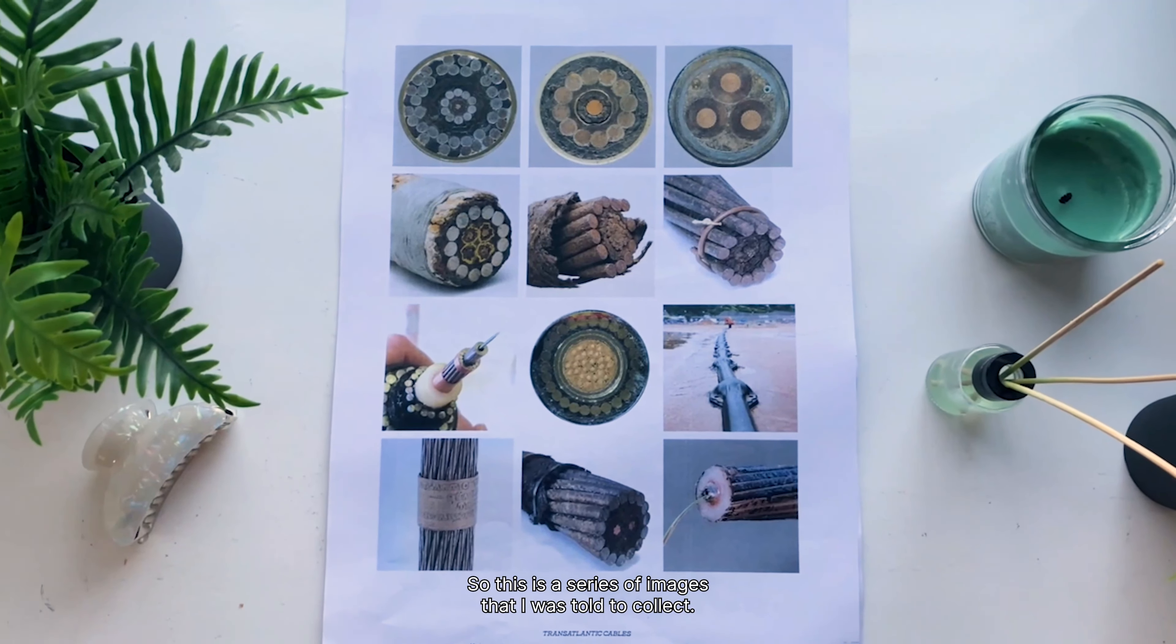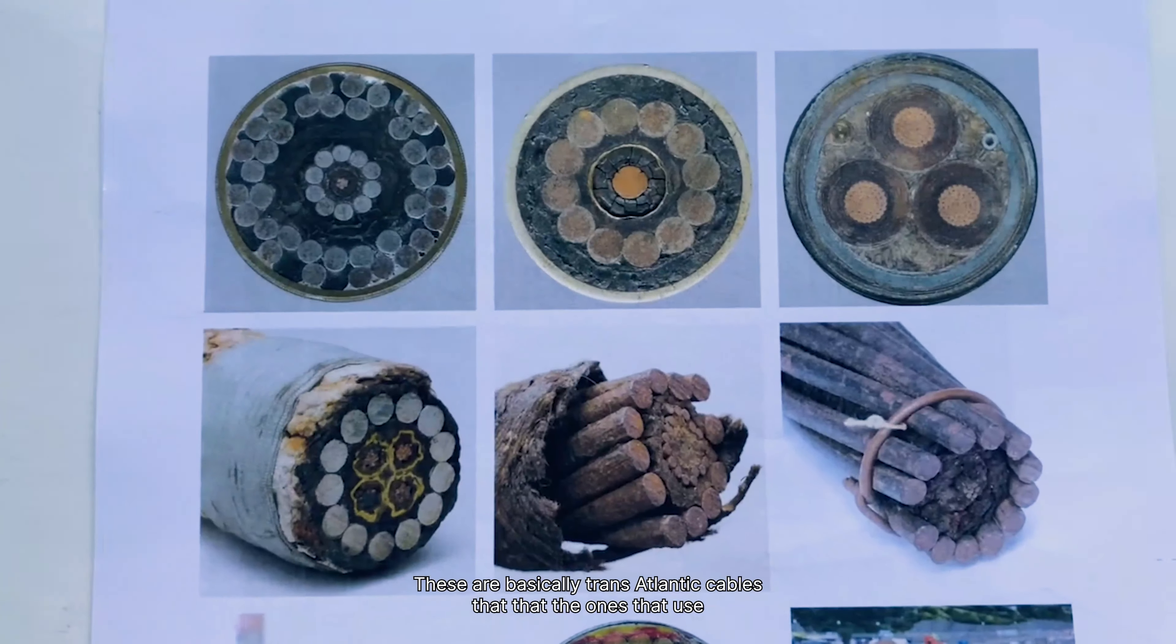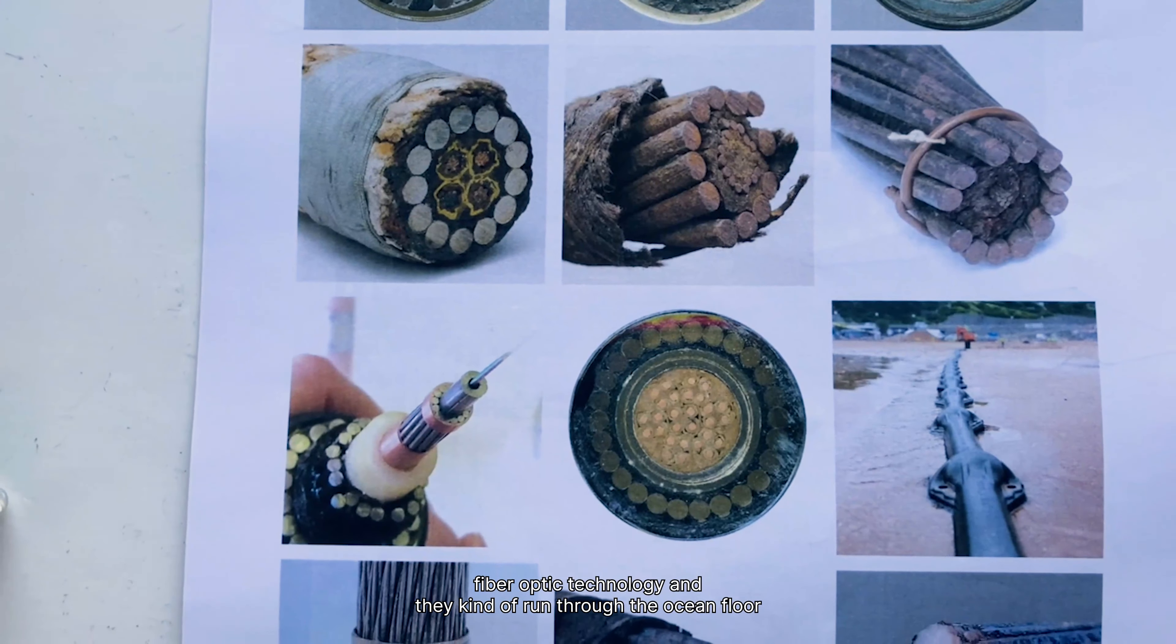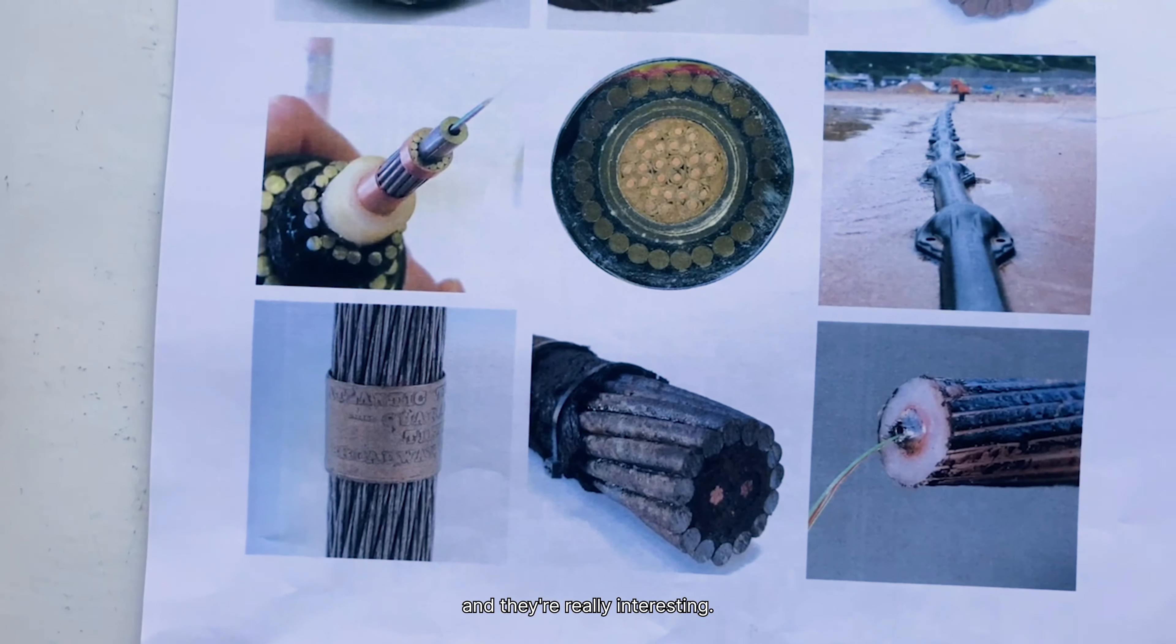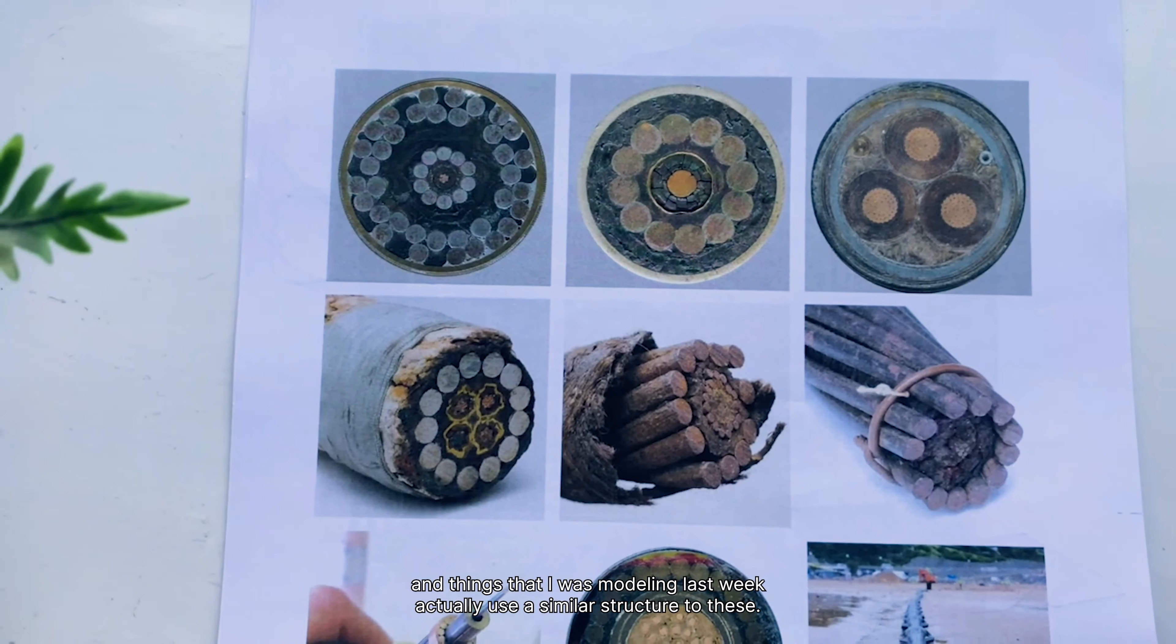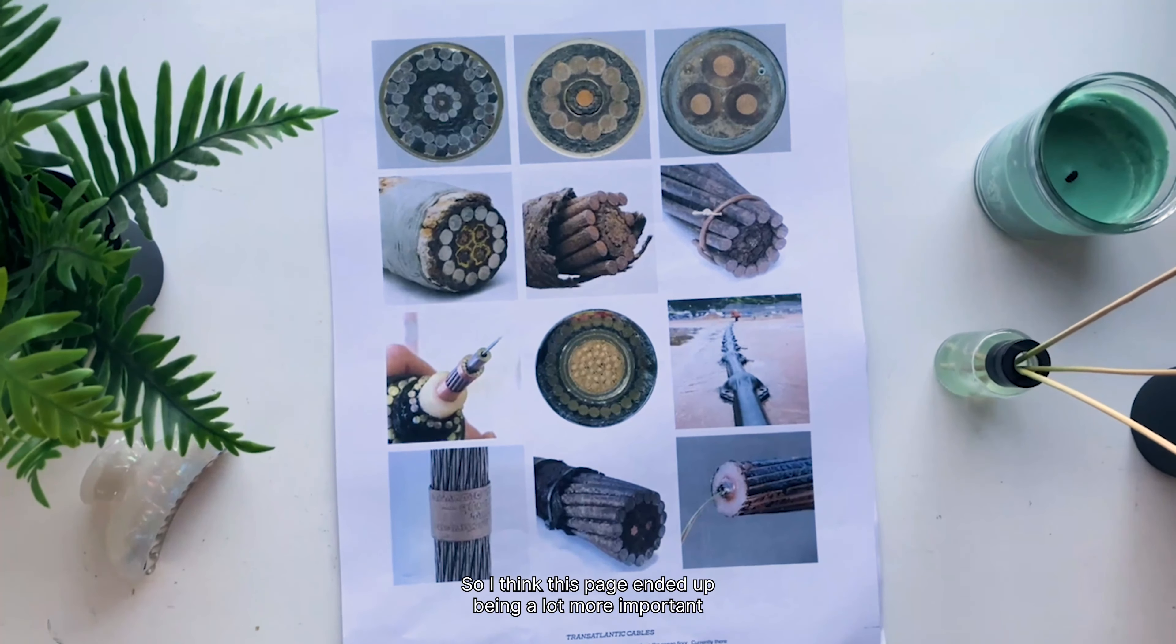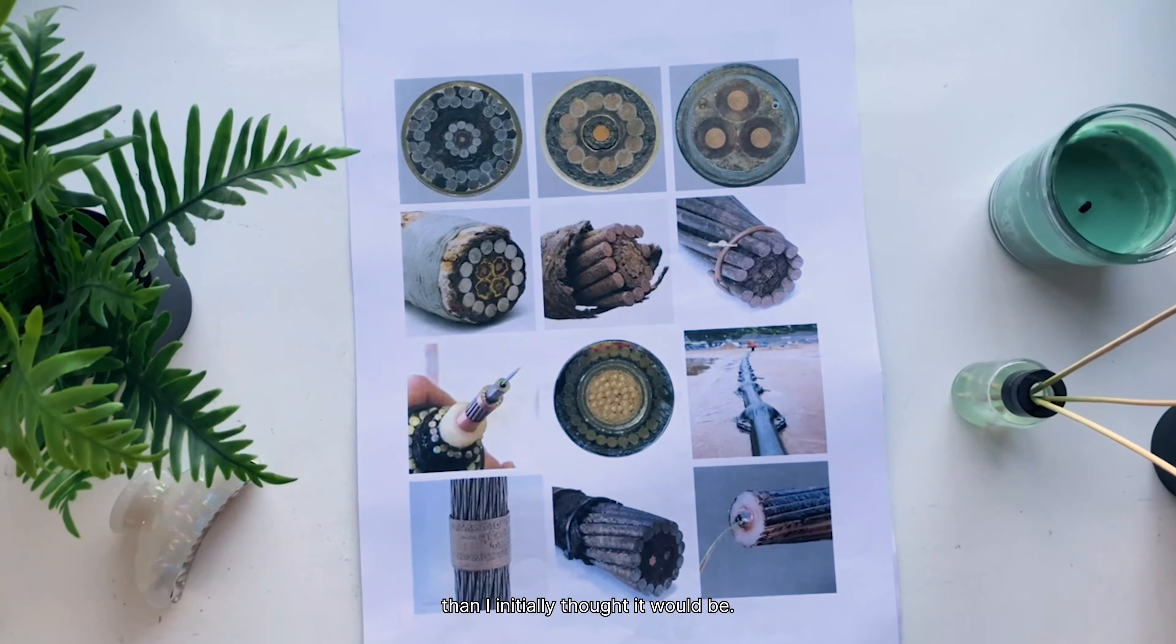So this is a series of images that I was told to collect. These are basically transatlantic cables so they use fiber optic technology and they run through the ocean floor. They're really interesting and I think it's also really nice that coincidentally those weaves and things that I was modeling last week actually use a similar structure to these. So I think this page ended up being a lot more important than I initially thought it would be.